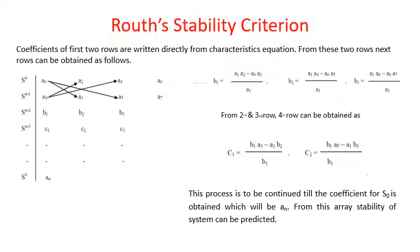The general characteristic equation is: D(s) = a₀sⁿ + a₁sⁿ⁻¹ + a₂sⁿ⁻² + ... + aₙ = 0. From this we identify the coefficients. In the Routh array, the first row (sⁿ) is filled with alternating coefficients: a₀, a₂, a₄, a₆. The second row (sⁿ⁻¹) is filled with: a₁, a₃, a₅, a₇. These two rows are written directly from the characteristic equation, and subsequent rows are computed from them.